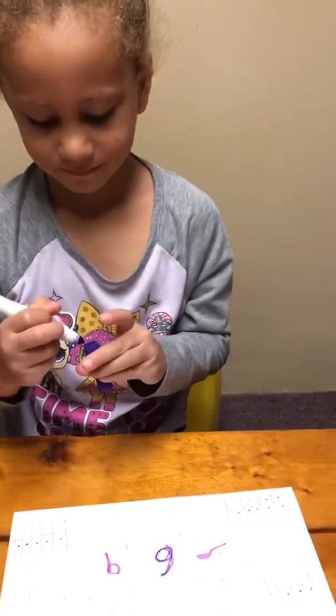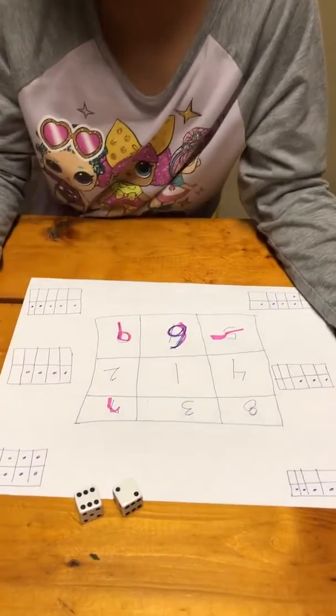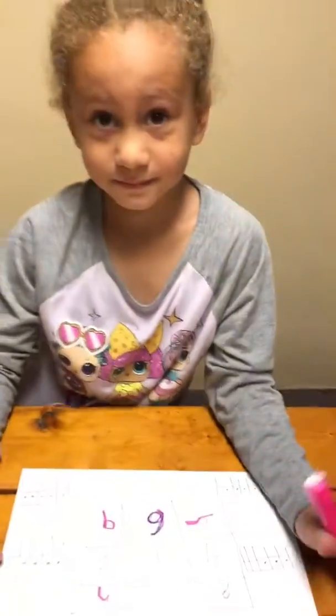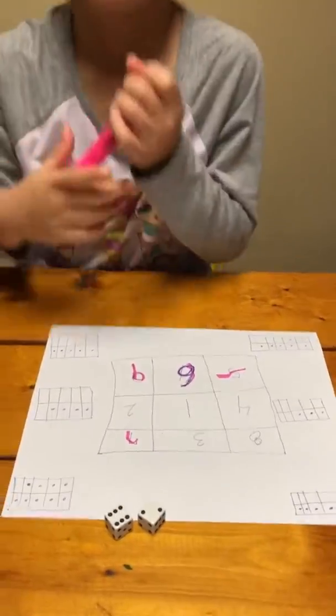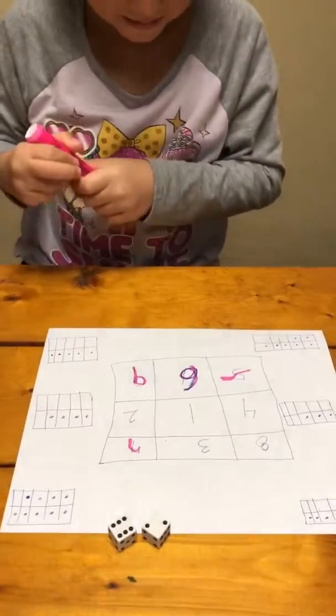There we go. Good job. See what I did? I totally did not get nine in the 10 frame, but that was an easy fix because Maya was able to identify that and we just added one more dot. Well, good job Maya, that's all there is to it. If we get three in a row, which you did, we're done. The game is over and we can do it again.